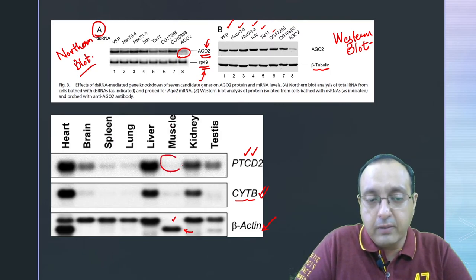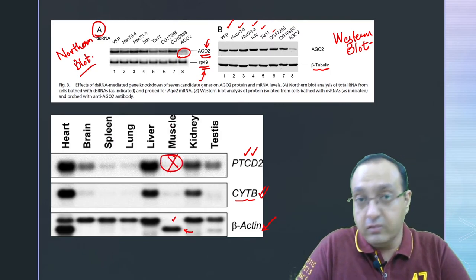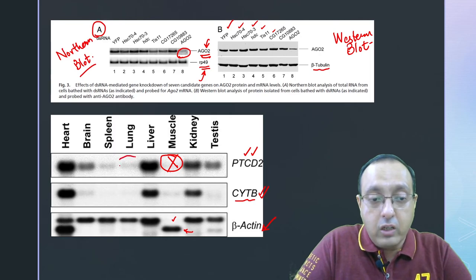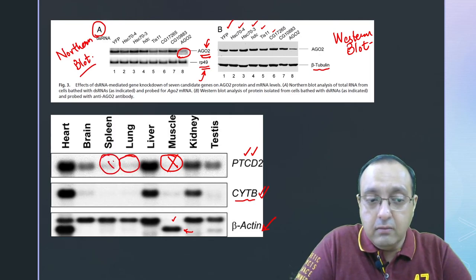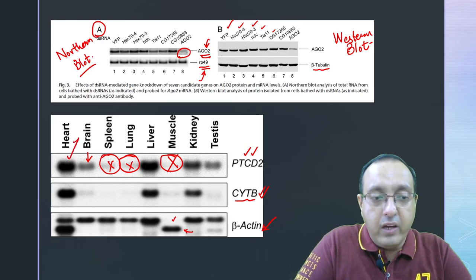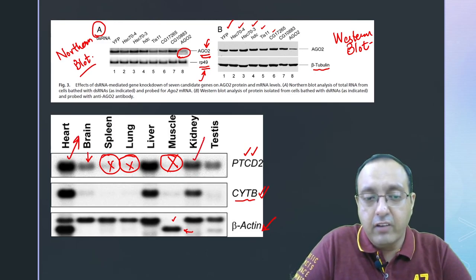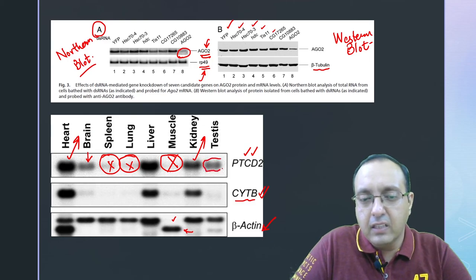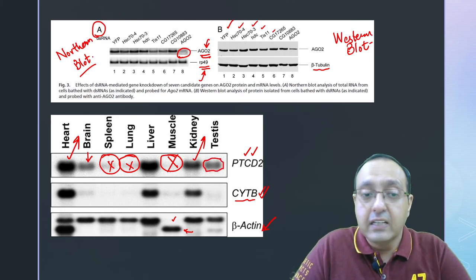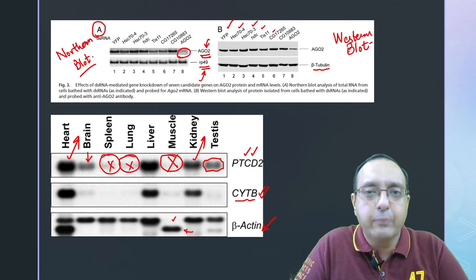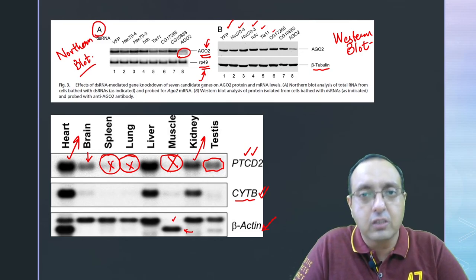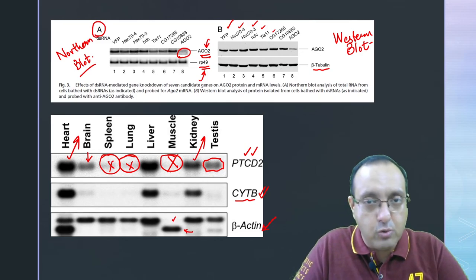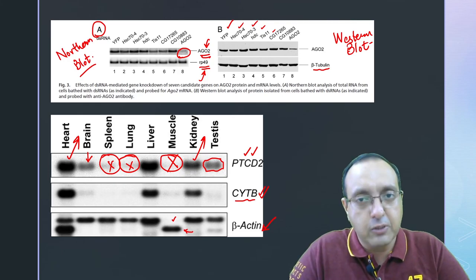Now you can see PTCD2, for example, it is not expressed in muscle at all. There is no RNA, not in lungs, not in spleen, very little in brain, but very high in heart, very high in kidneys, and a little bit in the middle range in testes. This gives you a very good snapshot of regulation of gene expression of the same gene in different tissues. Very important for gene expression studies.